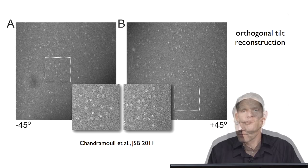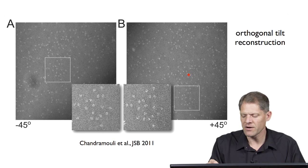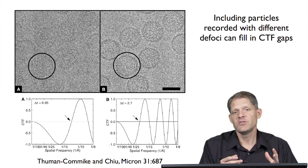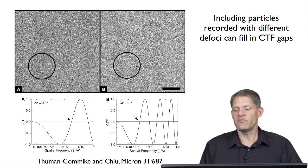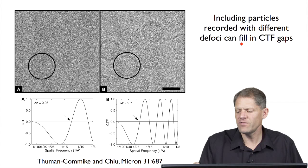To show an example of the data collection for orthogonal tilt reconstruction: here's a field of particles recorded at minus 45 degrees, and here's the tilt pair collected at plus 45 degrees, with enlarged inserts of sets of particles from both images. In addition to recording tilt pairs, it can also be advantageous to record images with different defocus values — sometimes we even record focus pairs of images. The reason is that including particles recorded with different defoci can fill in gaps in the contrast transfer function.